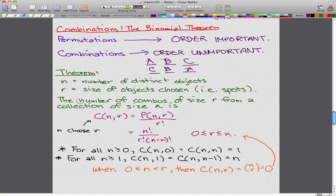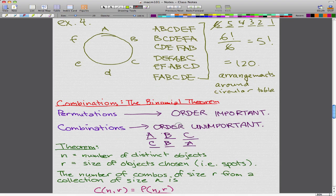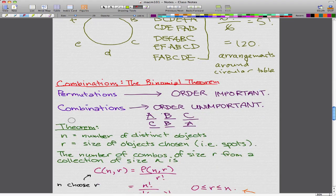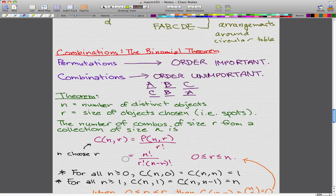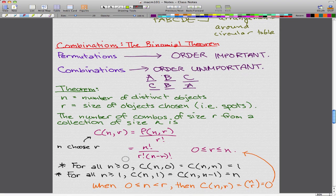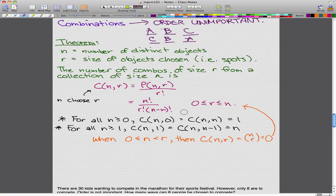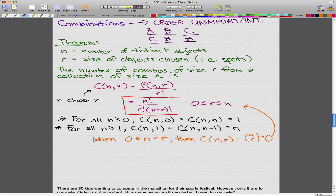And the number of combinations of size R from a collection of size N is represented by this formula. C(n,r) equals P(n,r), which is our permutation formula that we had way back in the last video, and we take that and divide it by R factorial. Another way to say C(n,r) is n choose r. Really, the formula that you have to remember is actually this formula.